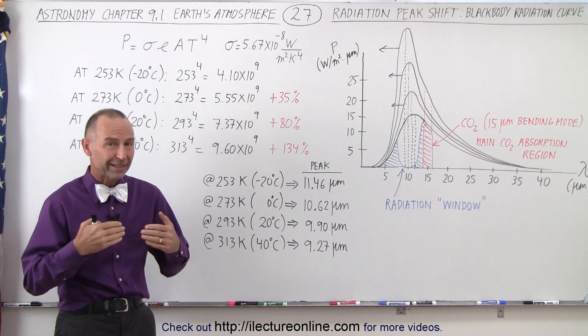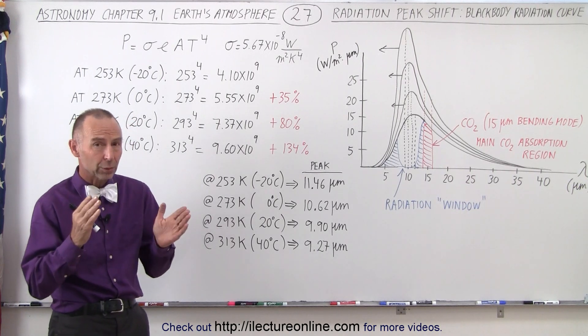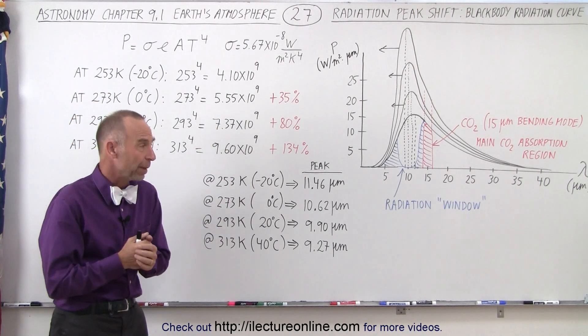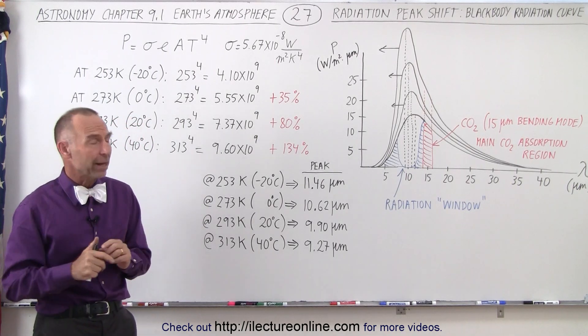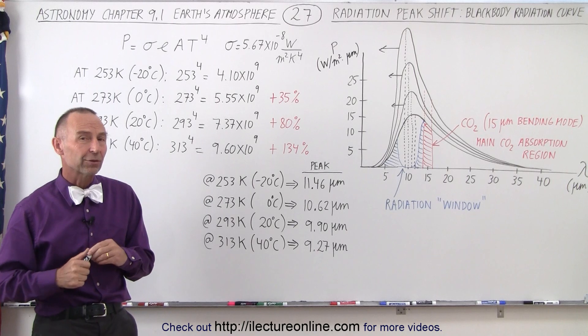On the last video, we saw the Stefan-Boltzmann's Law and how that allowed much more radiation to escape to space when the temperature in the surface of the Earth increased by even a small amount. But there's a second factor at play as well.